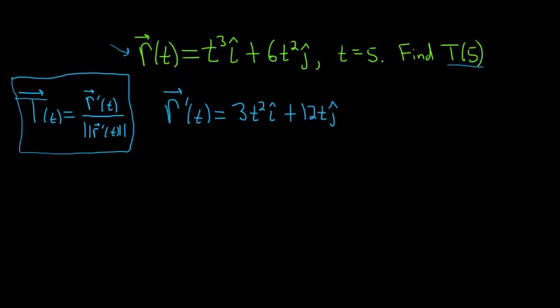We have r prime, and that's really the only thing we need. So we can go ahead and plug in 5 now. So r prime of 5 is going to be equal to 3 times 5 squared i-hat plus 12 times 5 j-hat. So this equals 75 i-hat plus 60 j-hat.